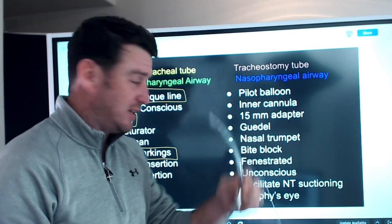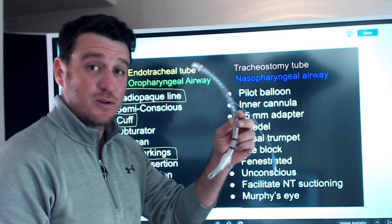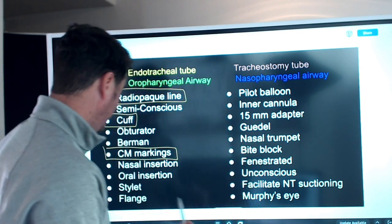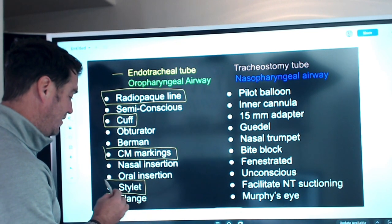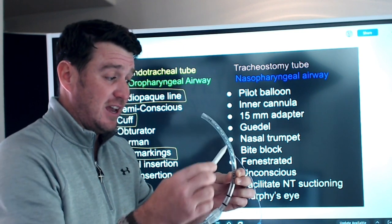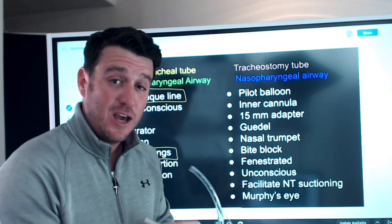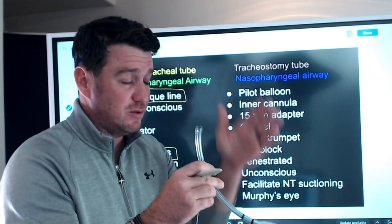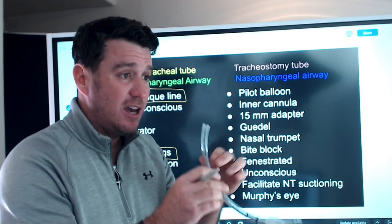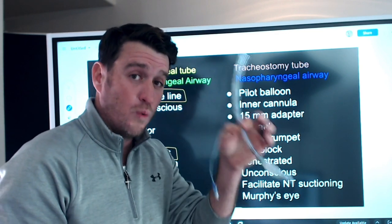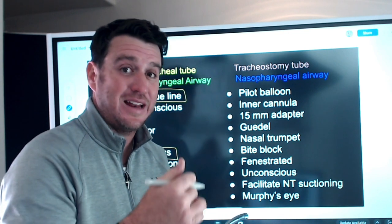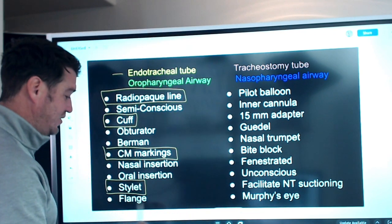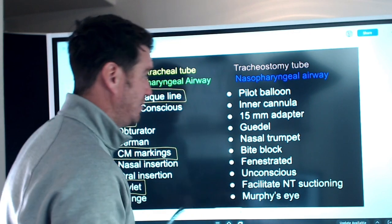Nasal insertion — you can insert an endotracheal tube nasally, but nasal insertion is not a distinguishing thought for the ET tube. Oral insertion — same thing, most commonly oral but not a distinguishing feature. Stylet — 100% goes with endotracheal tube. We use a stylet when inserting an ET tube to create rigidity so that when you see the vocal cords and advance into the trachea, you don't have a floppy tube. Flange does not go with the ET tube.